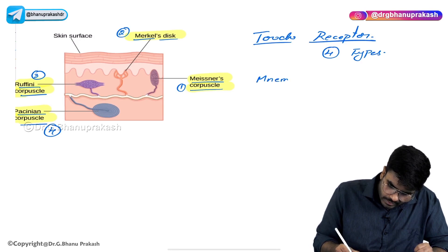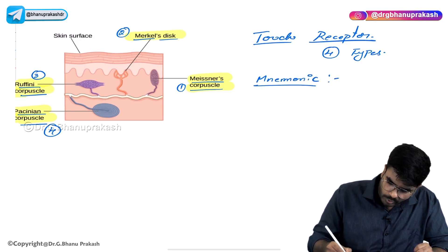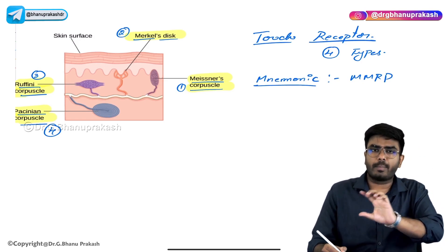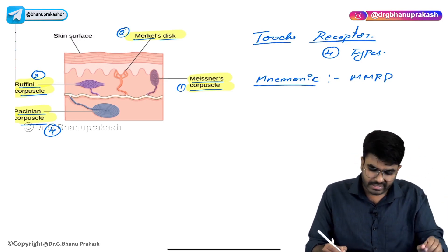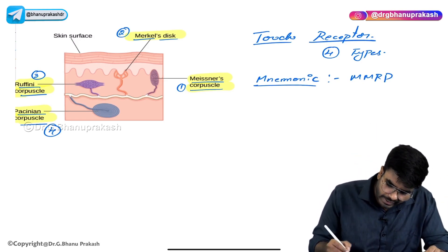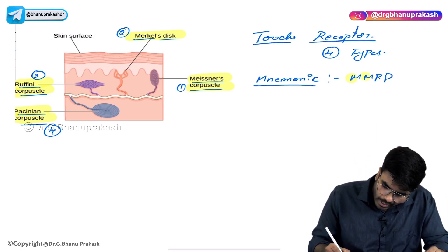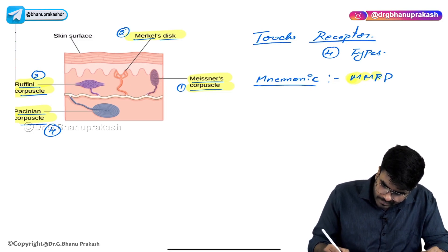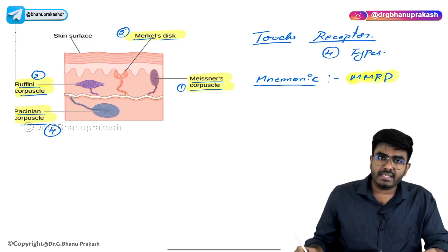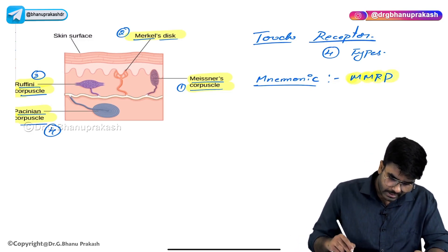The easiest way to remember these corpuscles is by using the mnemonic MMRP — just like MRP (maximum retail price). So remember it as MMRP: Meissner's, Merkel's, Ruffini's, and Pacinian corpuscles.